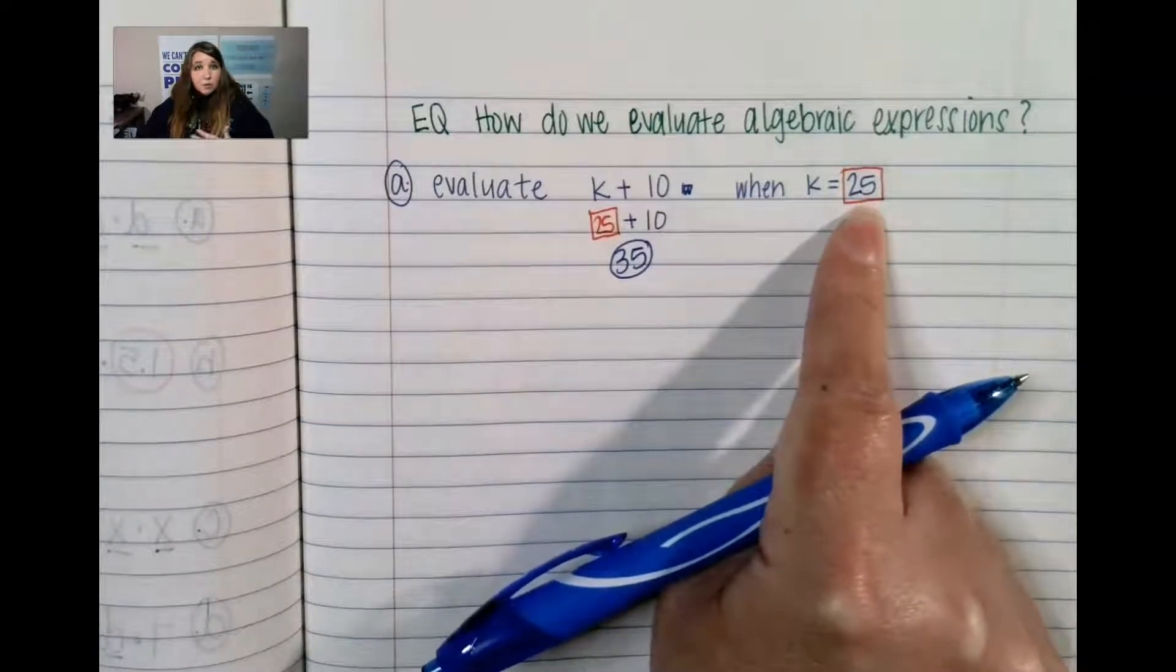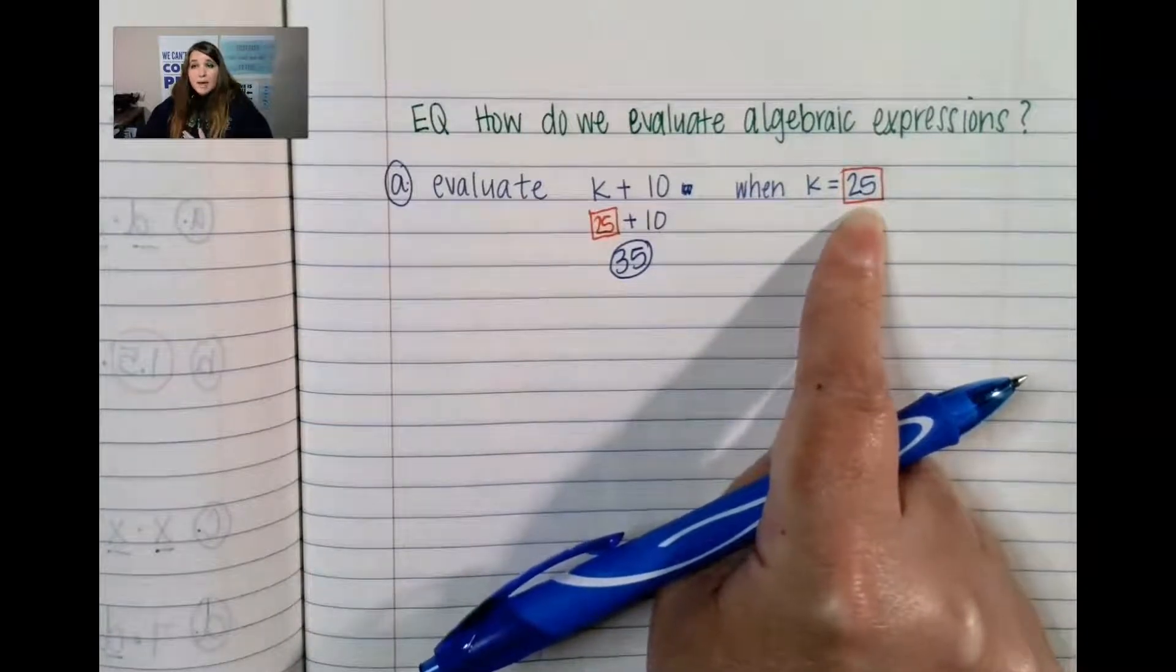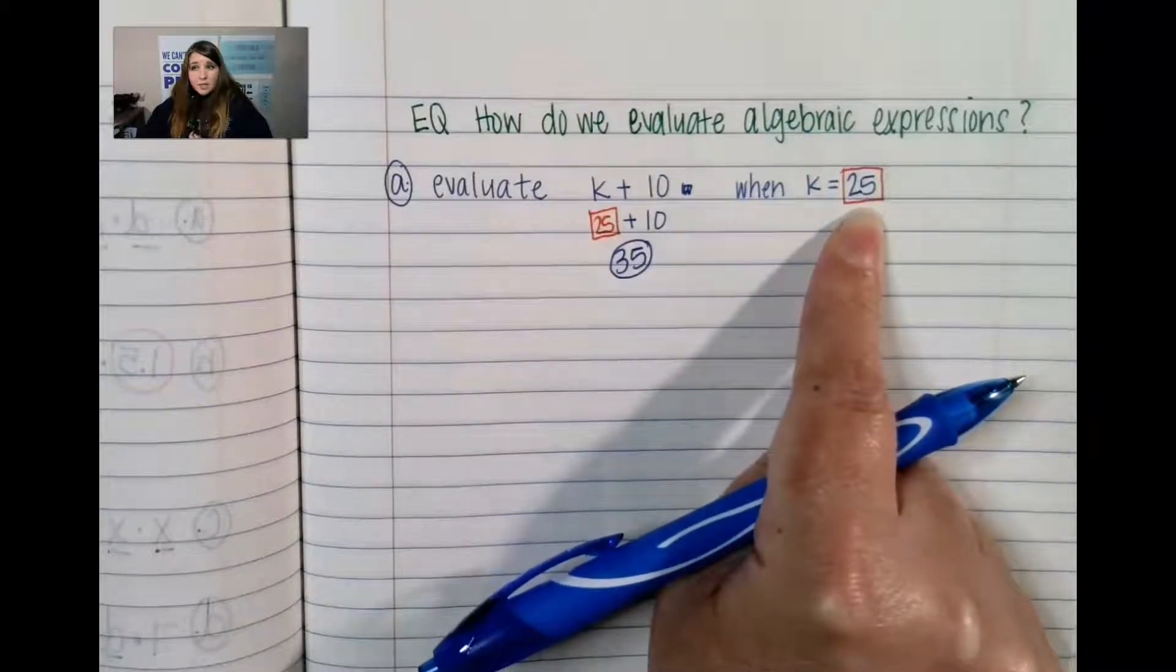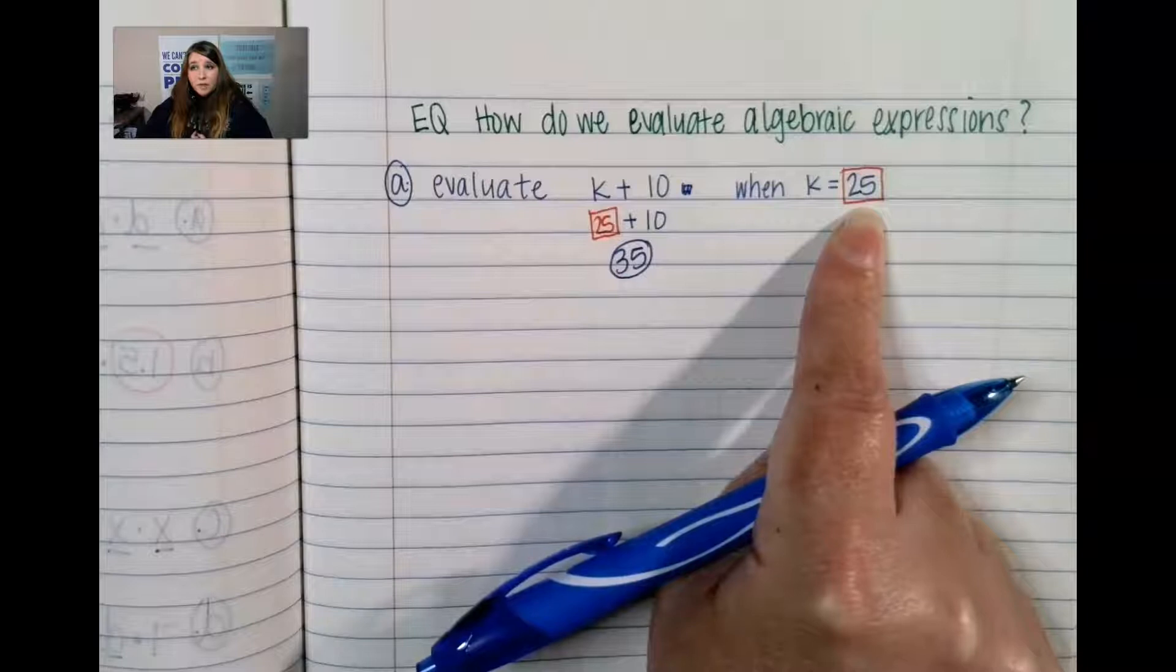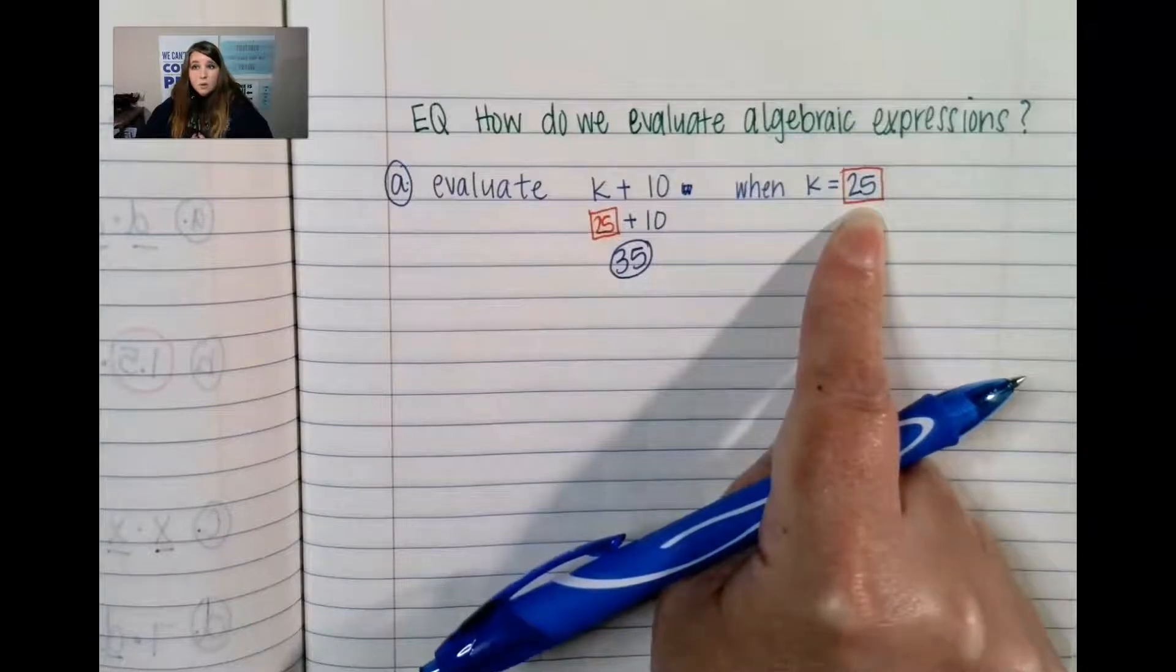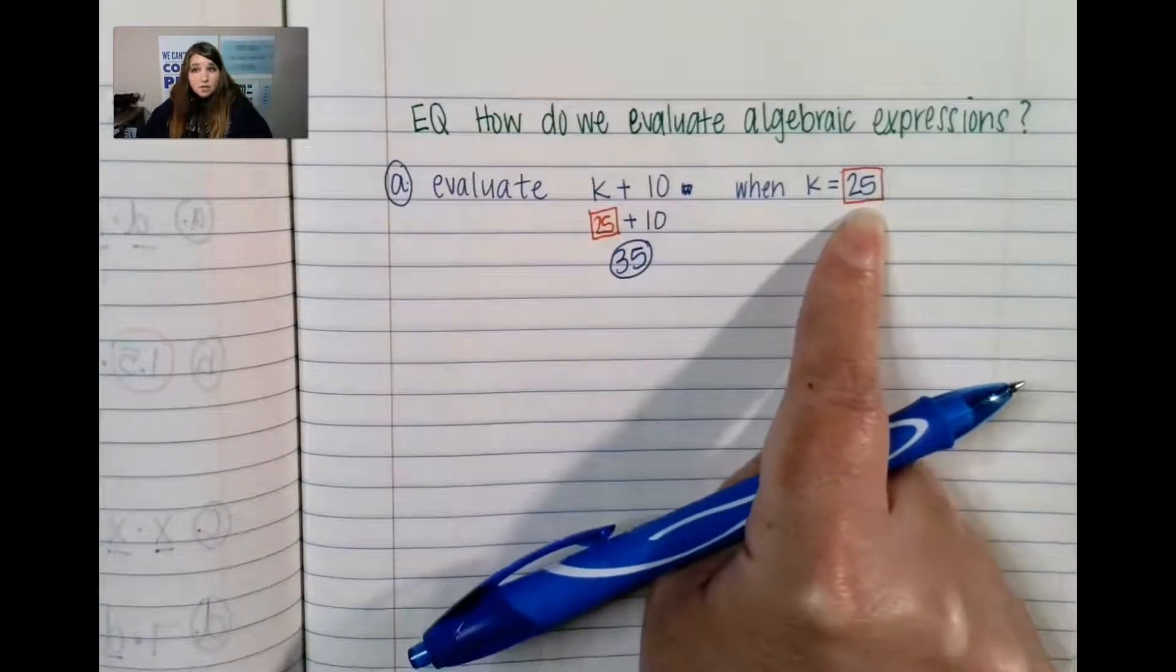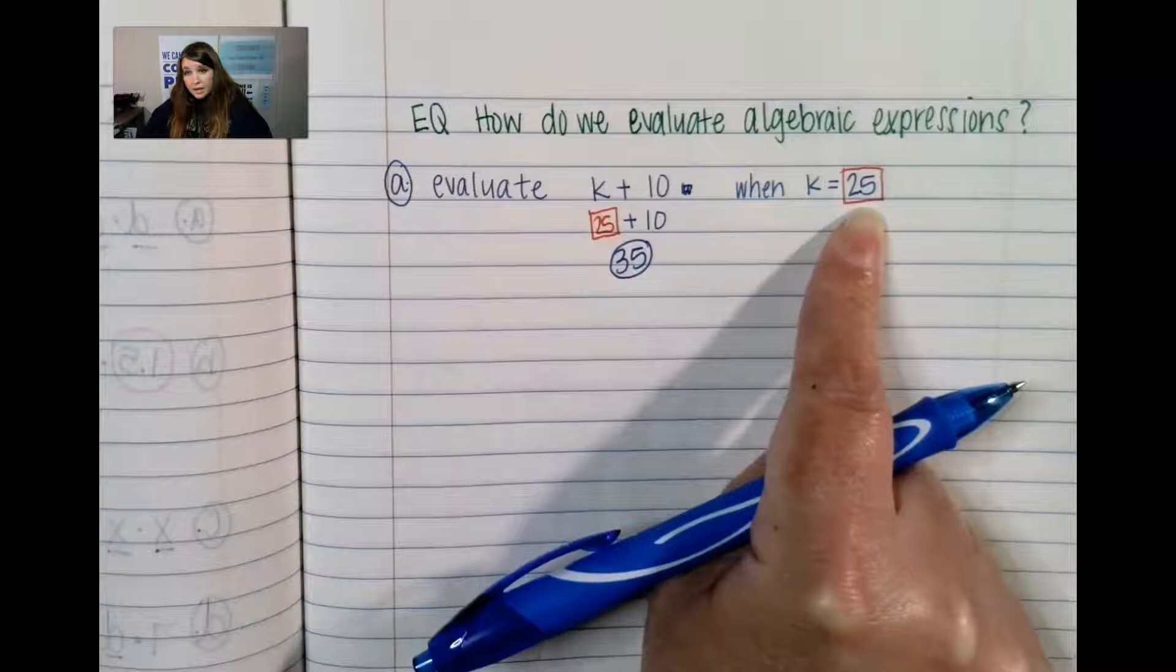So in this problem the math people whoever those people are gave us the value of k. If this was like a real world problem we would get the value from whatever if this was like ketchup and it was like the amount of ketchup packets we use when we go use like hot dogs or something. I don't know. Then this could possibly change.